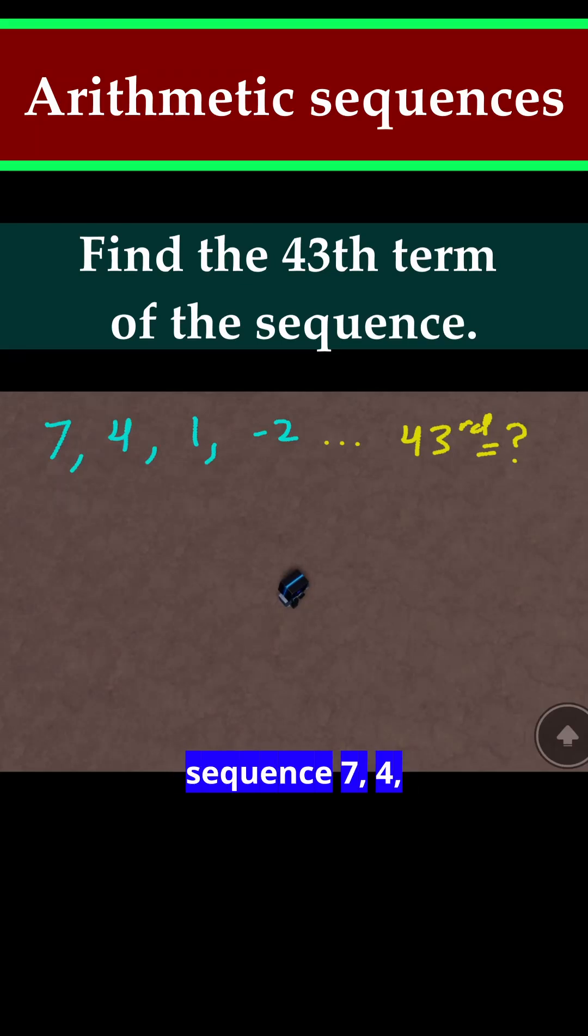In this problem, we have the sequence 7, 4, 1, negative 2 that continues on and we need to find the 43rd term.